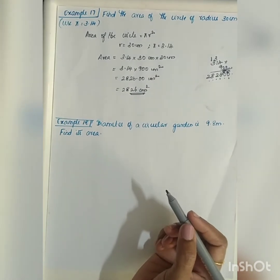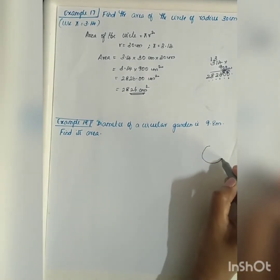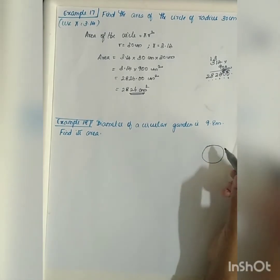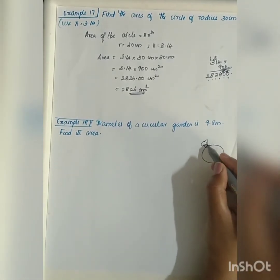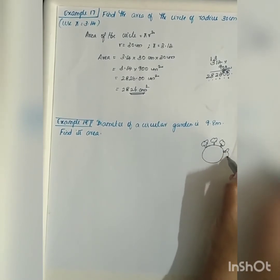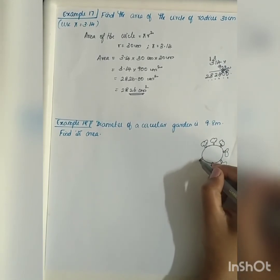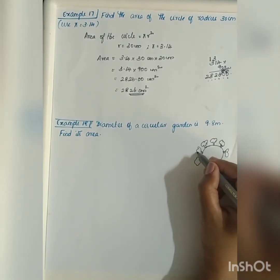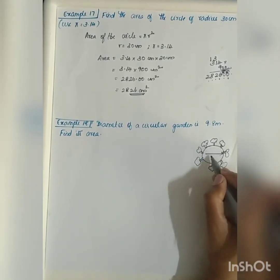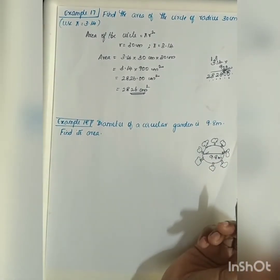Let's move on to the next question. Example 18. Diameter of a circular garden is 9.8 meter. Find its area. If this is the circular garden, garden is the shape of the circle.